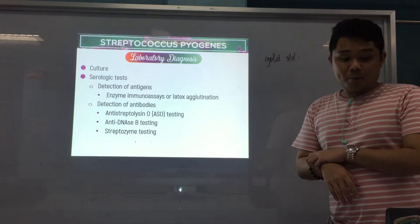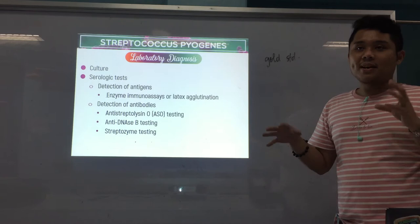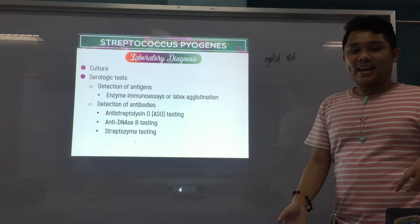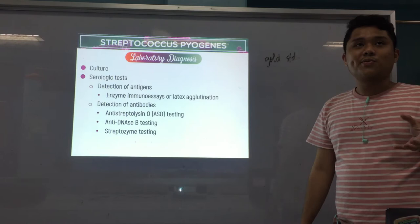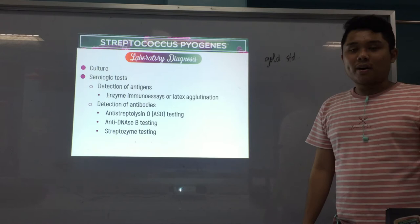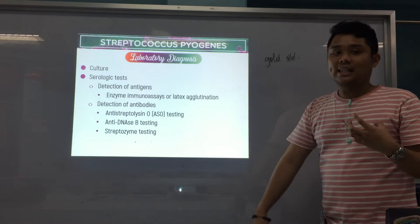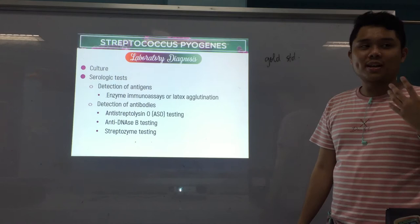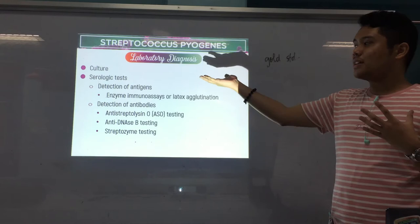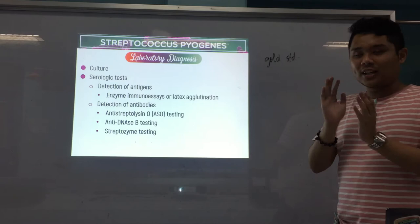We use serological tests because we determine if antibodies have been produced — or antigens have been present. That helps identify the post-streptococcal sequelae. For example, if a patient has hematuria, that could be caused by glomerulonephritis. The doctor may request serological tests to determine if the glomerulonephritis is caused by a past Streptococcus pyogenes infection. At this time, culture will not show anything, so we rely on serological tests.